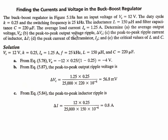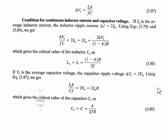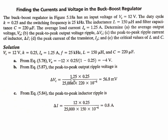Peak-to-peak output voltage ripple delta_Vc = Ia·K/(F·C) = 1.25 × 0.25 / (25 kHz × 220 µF) = 56.8 mV — a very small value, which is an advantage. Peak-to-peak ripple current delta_I = Vs·K/(F·L) = 12 × 0.25 / (25 kHz × 150 µH) = 0.8 A.